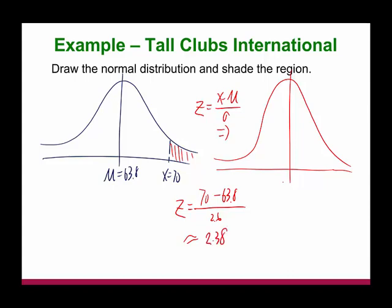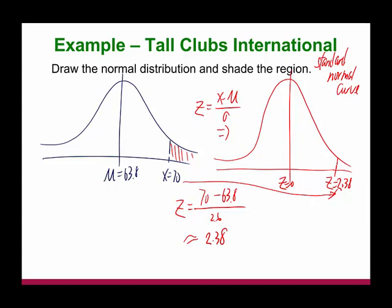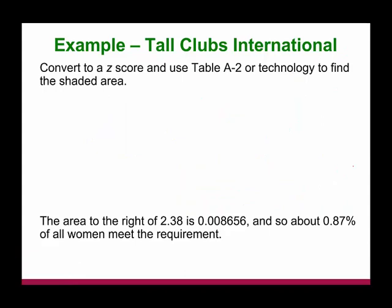Now we standardize this. On the standard normal curve, z-score equals zero at center, and right here the z-score is equal to 2.38. This height has been turned into a standardized z-score. That means this height is 2.38 standard deviations above the mean. From there, we'll be able to find out the probability associated with this height.